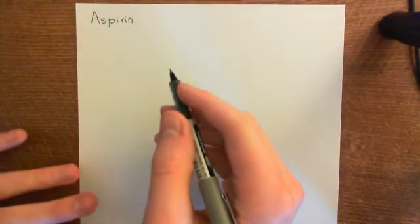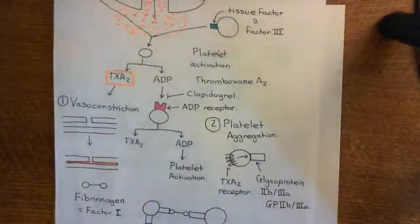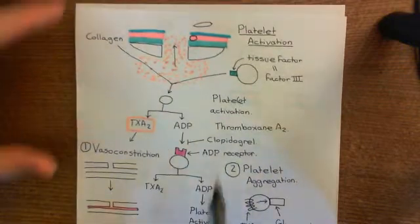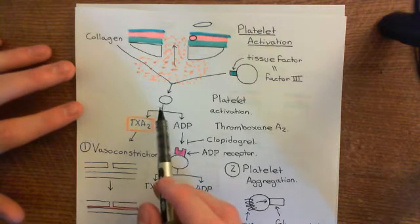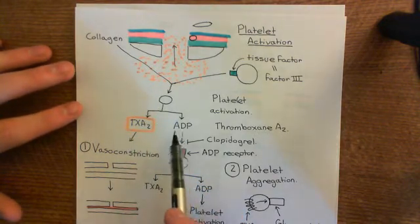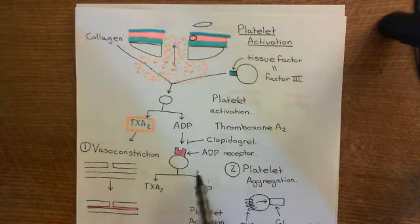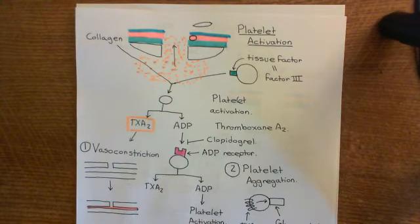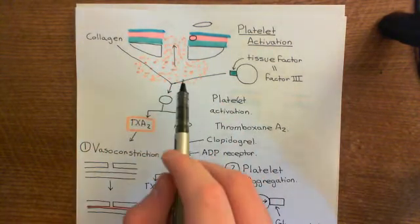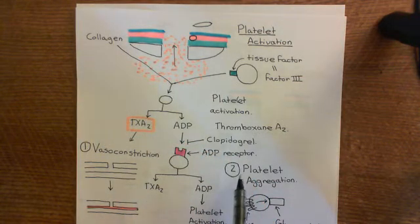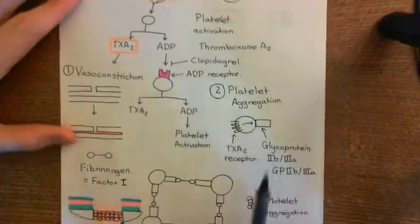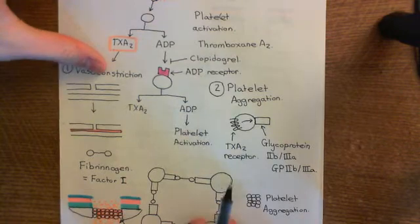When you get platelets activated — when platelets are exposed to collagen and tissue factor — it leads to the activation of those platelets, and those platelets start producing thromboxane A2 and ADP. ADP goes on to cause a chain reaction, but the overall effect of platelet activation is to lead to a massive rise in thromboxane A2. Thromboxane A2 causes vasoconstriction, and also makes the platelets sticky by activating glycoprotein 2B/3A.